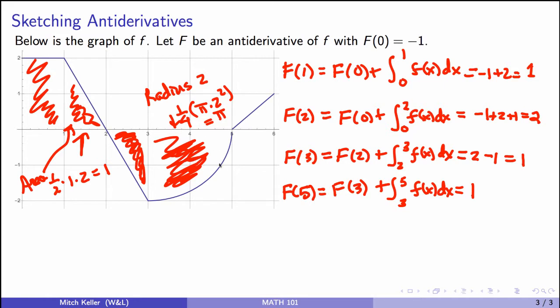Again, it's below the axis, so the net signed area contribution, we get a minus pi. Okay, 1 minus pi. That's a perfectly good number.